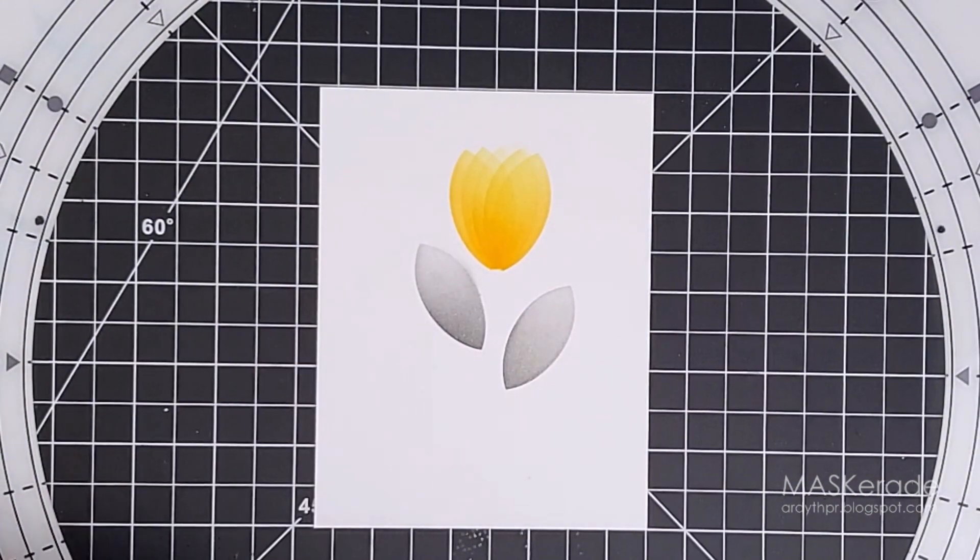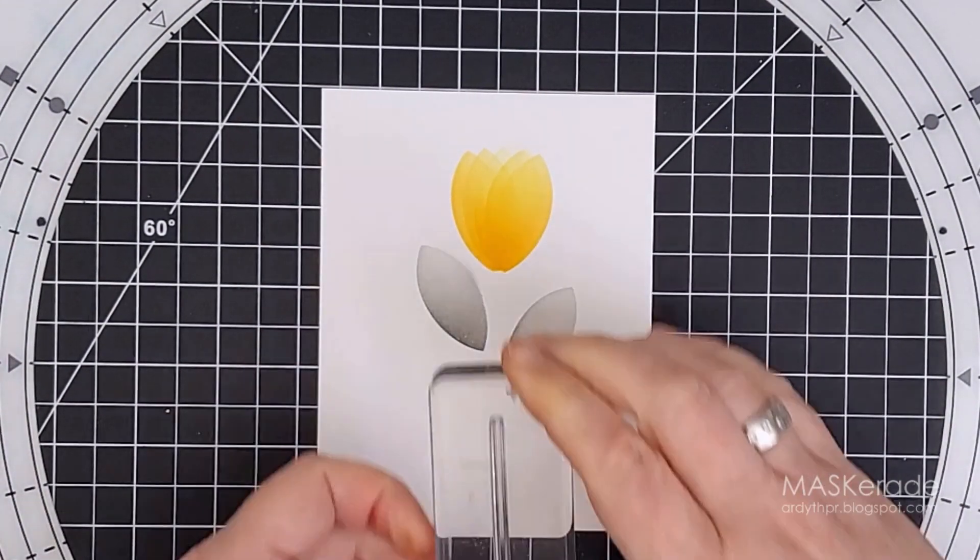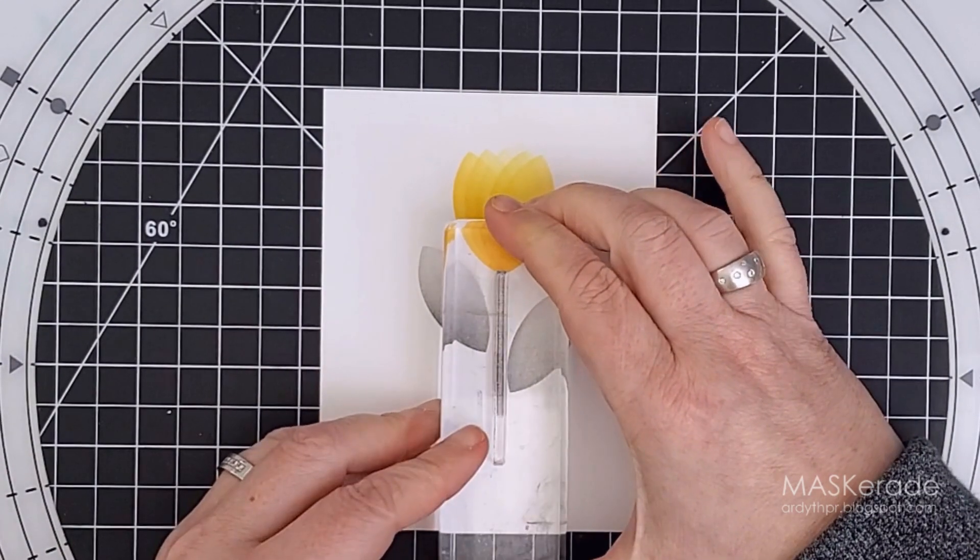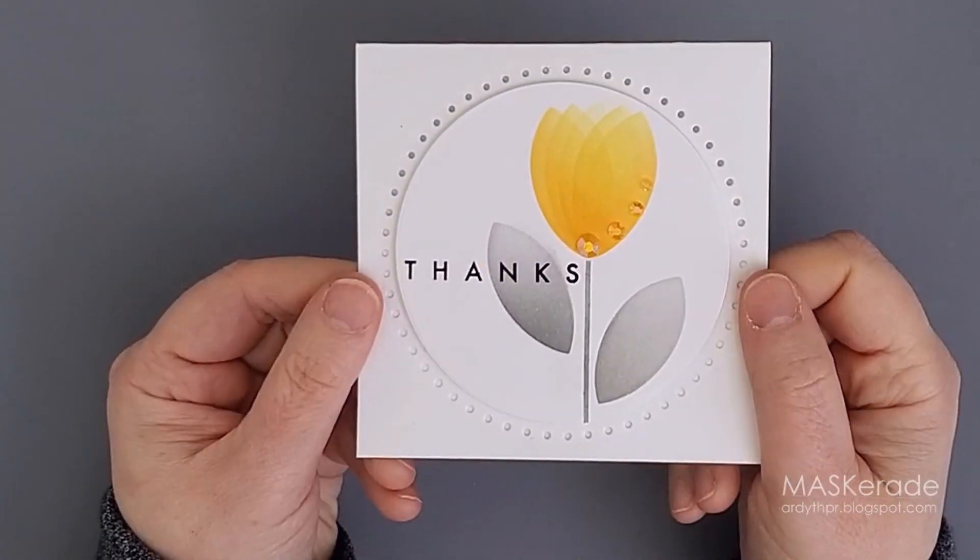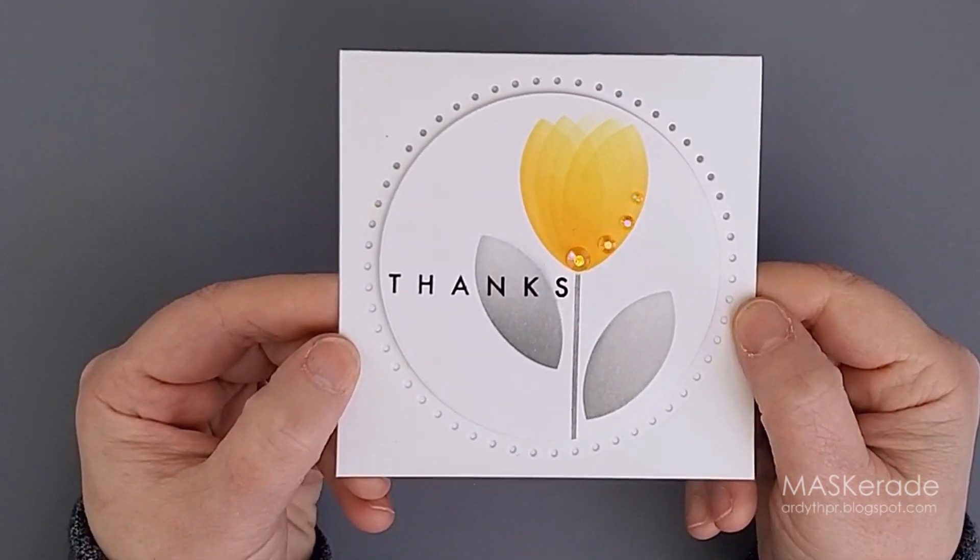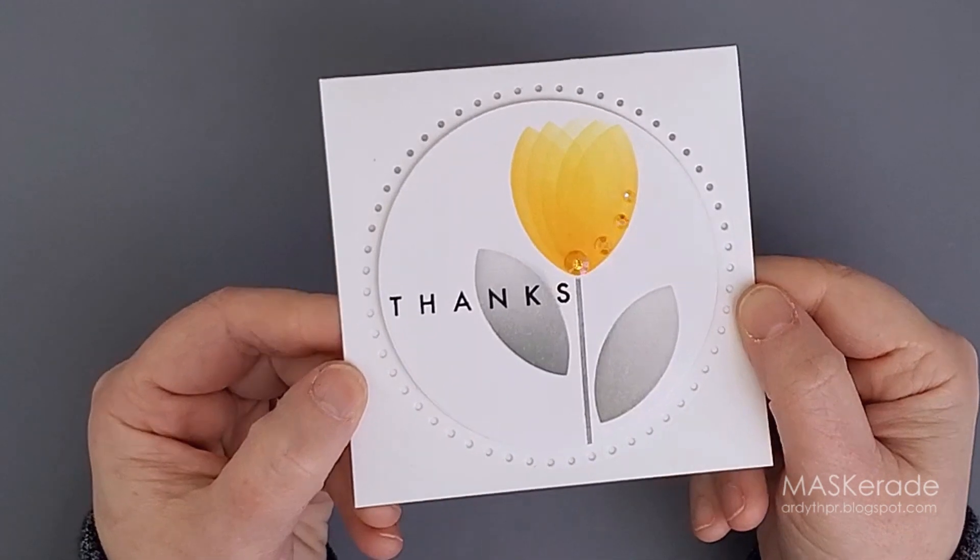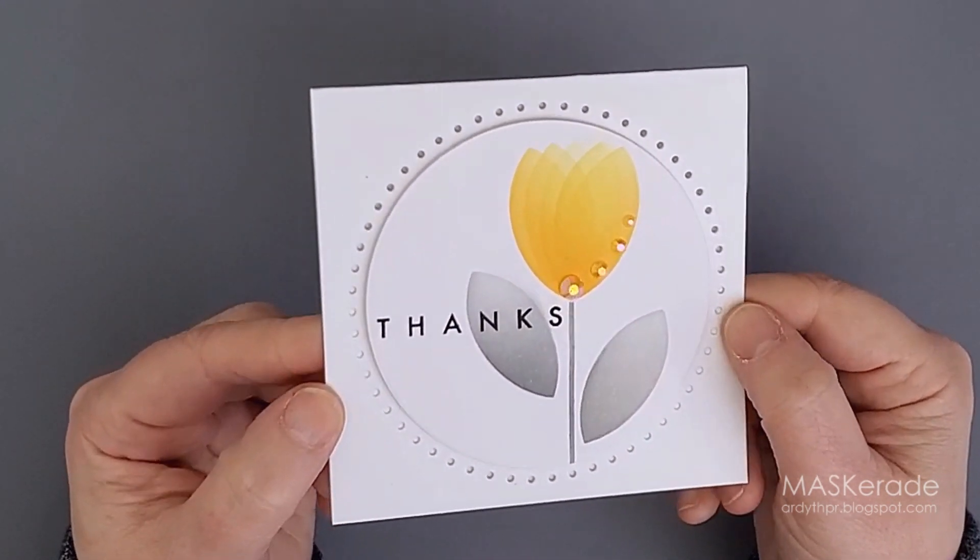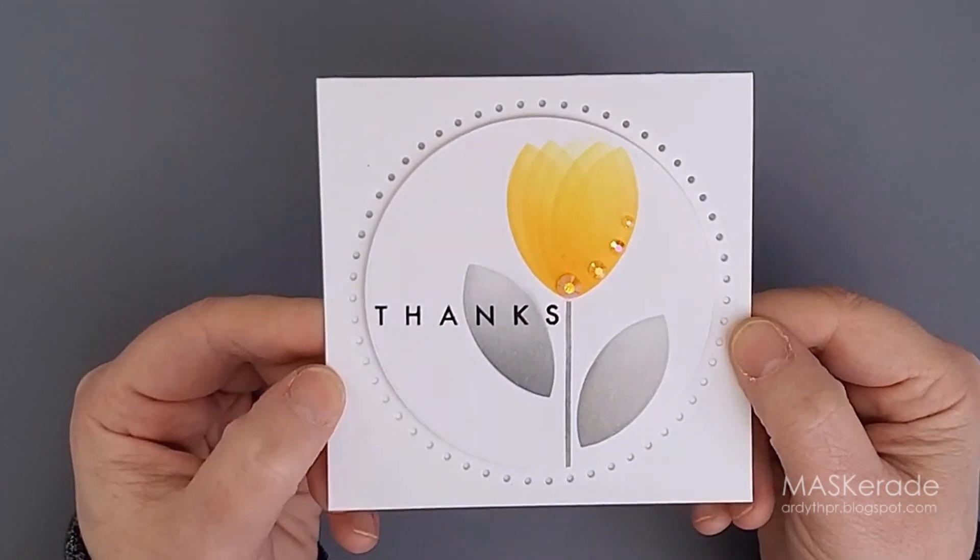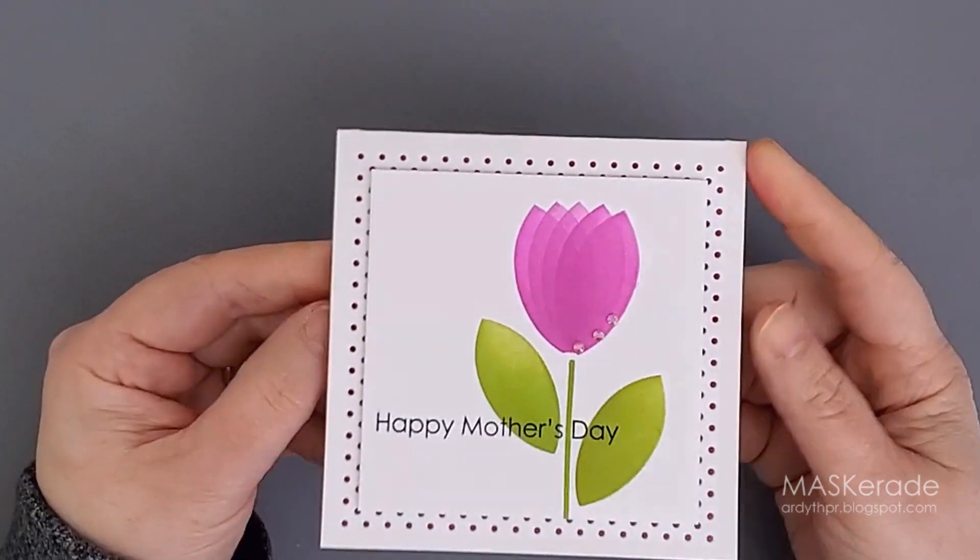After all that talk about geometry and precision, you would have thought I would have gotten my MISTI out, but no, I just eyeballed it. To finish the card, I stamped a sentiment in black and I cut the tulip panel with a circle die and popped it up on a white card base. That frame of dots on the card base was created with a new Ellen Hutson stitching die, and it adds the perfect amount of background interest.